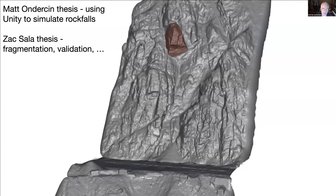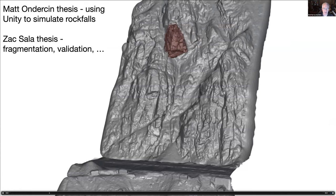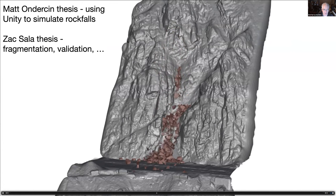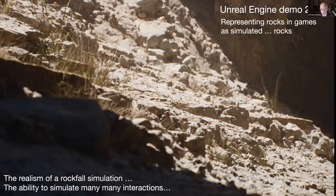We started playing with these ideas almost ten years ago using the Unity game engine. Matt Anderson built a preliminary rockfall simulation using Unity, and then Zach Sala did work on increasing the ability to have fragmentation and to do validation of the results. Essentially what we were getting at was that we could use a game engine to do rockfall simulation in a little model of the real world. The latest demo of the Unreal engine did rockfall simulation as a side effect of having a character walk through a cave — with orders of magnitude more particles and dramatically better visuals. Real-world simulation of things we face in geotechnical mapping along railway corridors is something we get for free out of using a game engine.